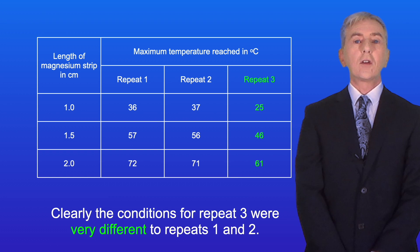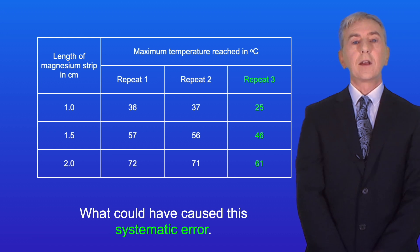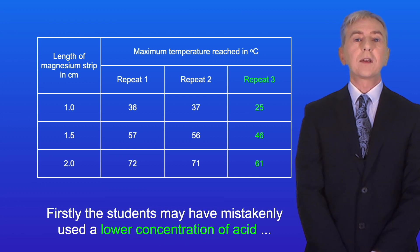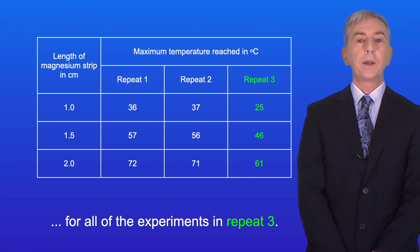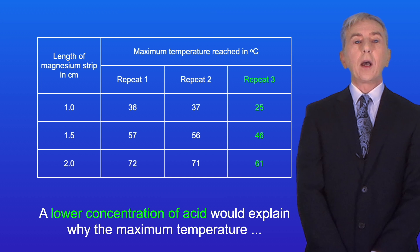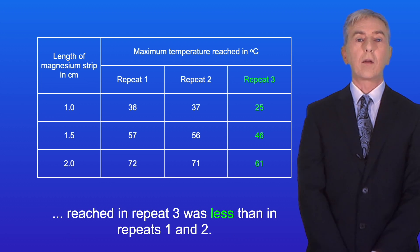Clearly, the conditions for repeat three were very different to repeats one and two. So what could have caused this systematic error? Well firstly the students may have mistakenly used a lower concentration of acid for all of the experiments in repeat three. A lower concentration of acid would explain why the maximum temperature reached in repeat three was less than in repeats one and two.